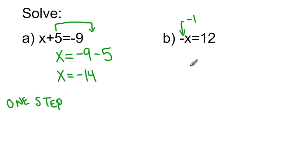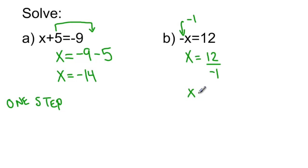That's negative 1 multiplied by x. So if I'm going to isolate the variable x, I'm going to divide both sides by negative 1 — or imagine picking up that negative 1, moving it to the other side of the equal sign, where it becomes the opposite operation, which would be division. So my solution would be x equals negative 12. Notice how when we move addition or subtraction to the other side of the equal sign, it changes from positive to negative or from negative to positive. And when we're moving multiplication or division to the other side, we don't change the sign.